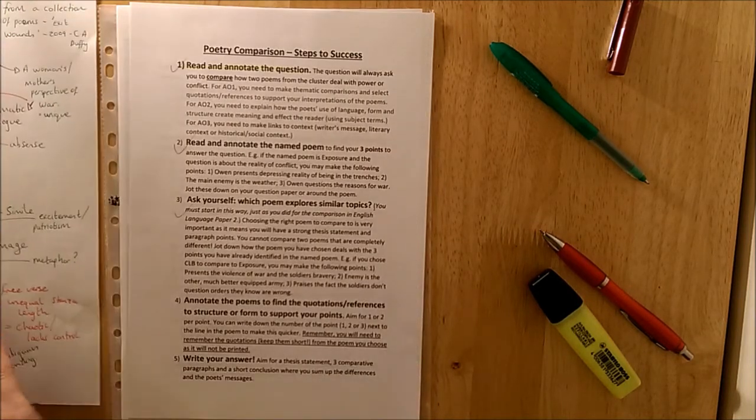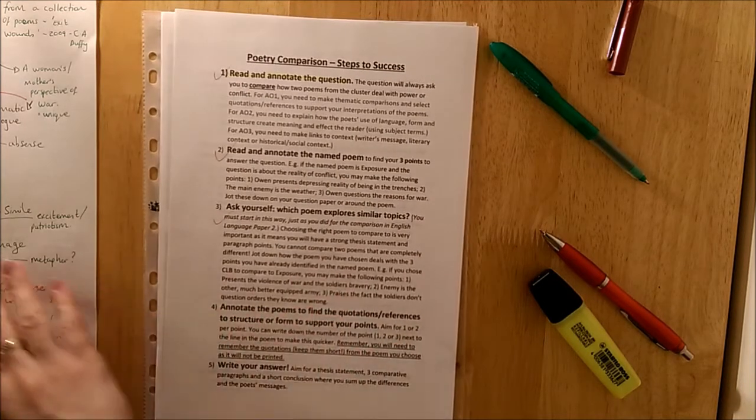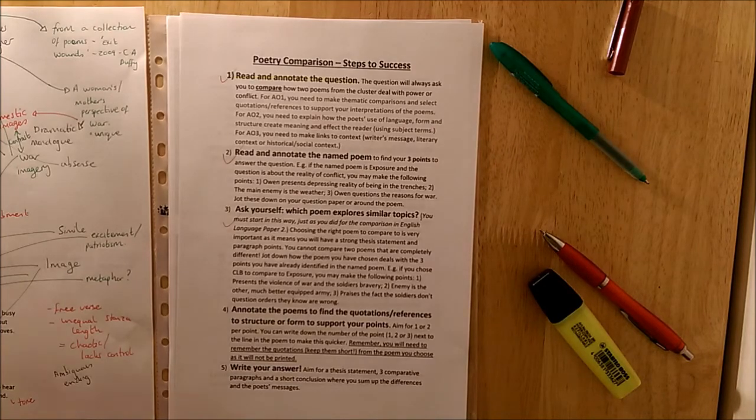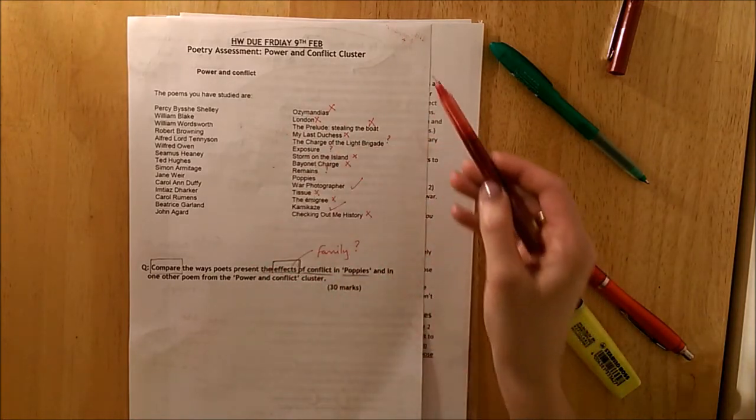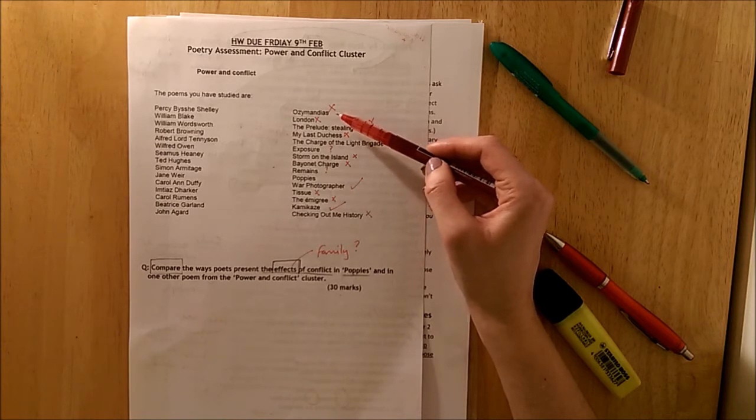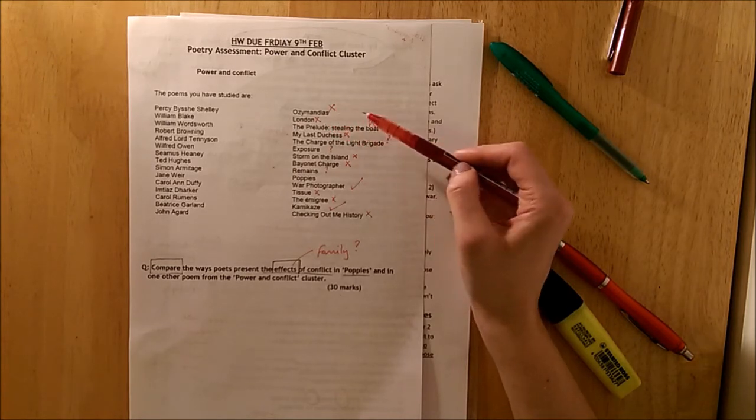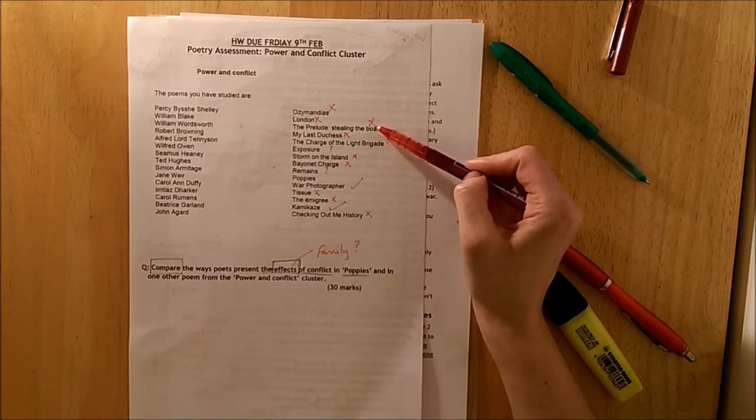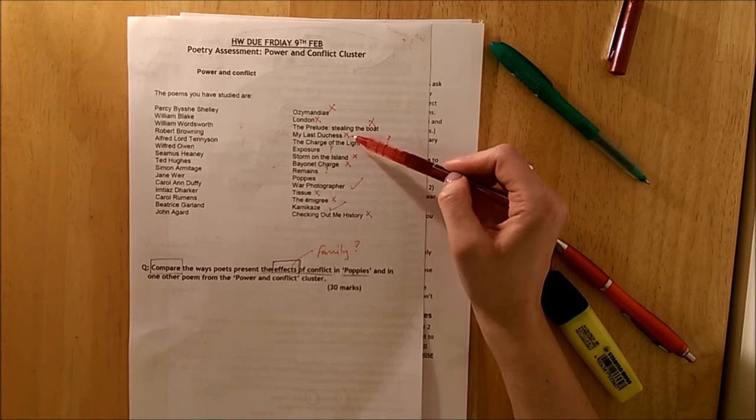Now once we've annotated our poem, we can move on to step three. Ask yourself which poem explores similar topics. So you've been kindly given a list of the poems that you've studied. And I've already gone through this myself. So I'm not going to compare it to Ozymandias. It's not a good comparison thinking about the effect of conflict. Again London's about conflict but it's not a good comparison with Poppies. Again the Prelude - it's about conflict but a different kind of conflict. So I'm not going to use that. My Last Duchess. Similar. That's more family conflict. Wealth conflict. Marriage conflict.